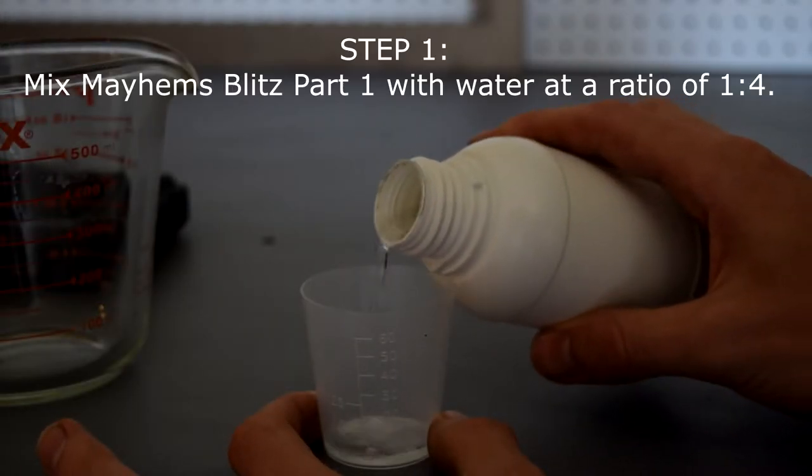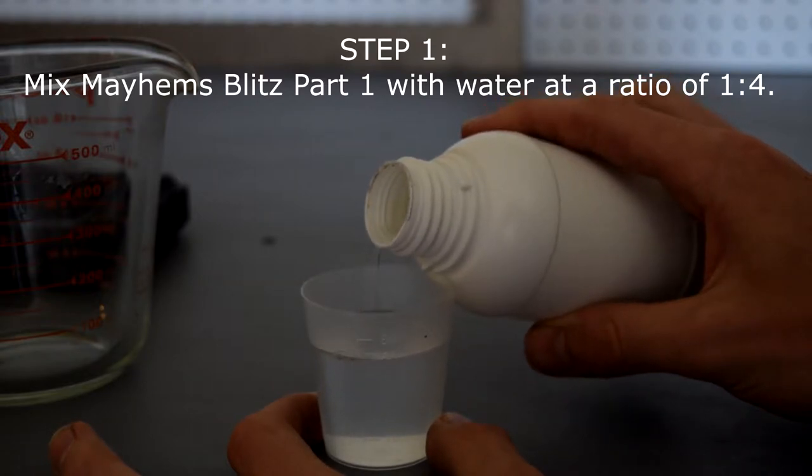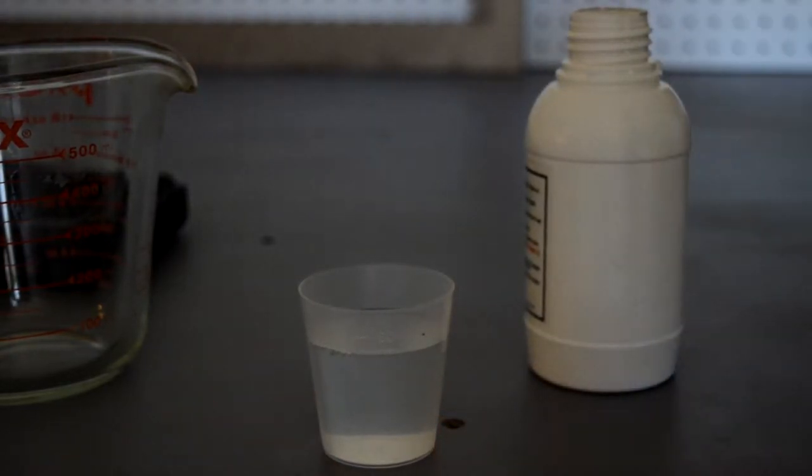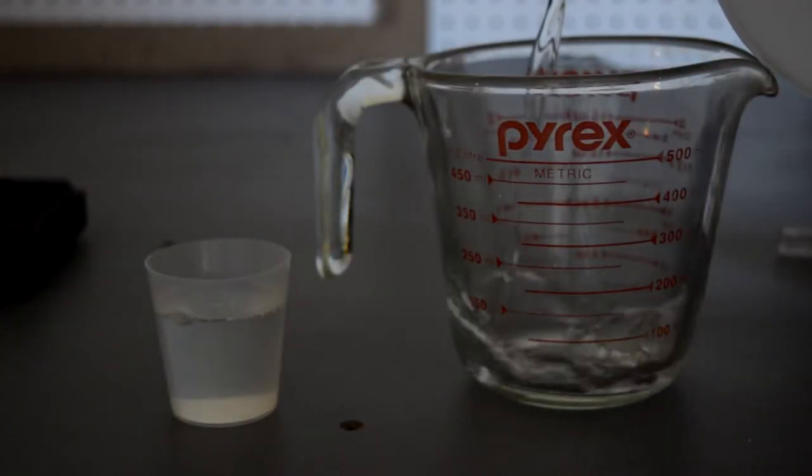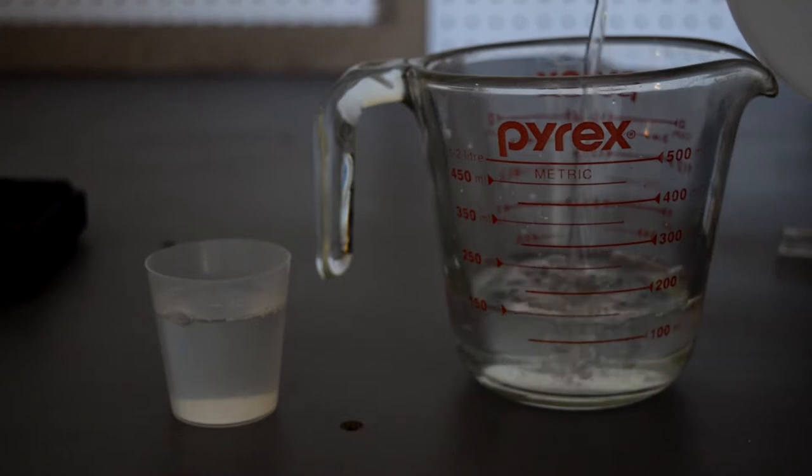For step 1, you need to mix your Mayhem's Blitz part 1 solution with water at a ratio of one part blitz solution to four parts water. For my single 360 millimeter radiator, I used 50 milliliters of the Blitz part 1 solution with 200 milliliters of water.